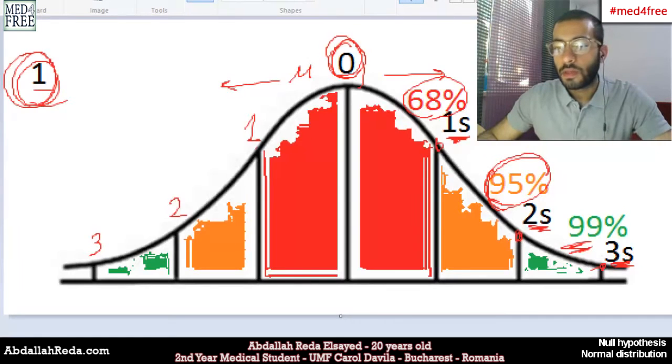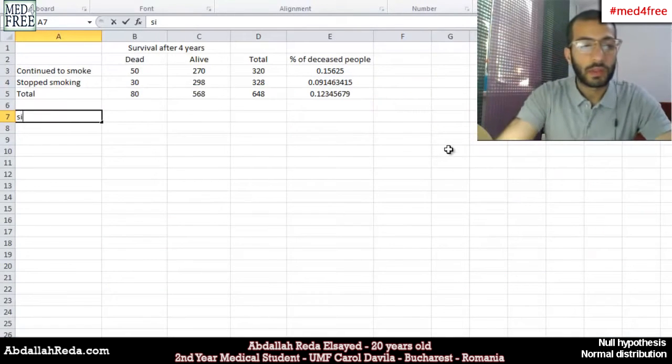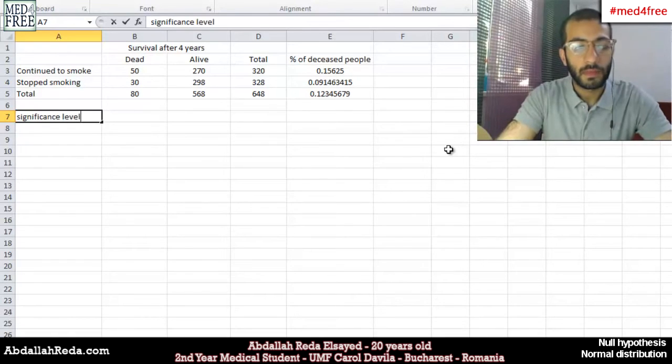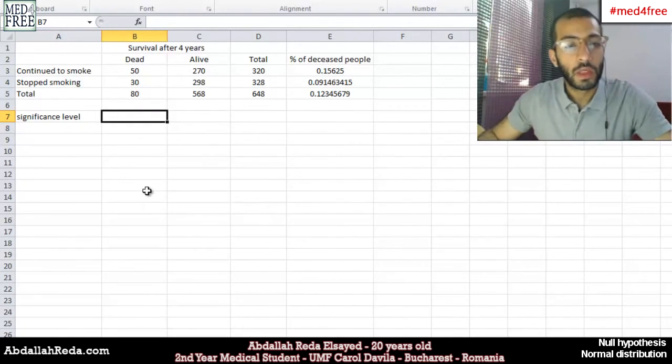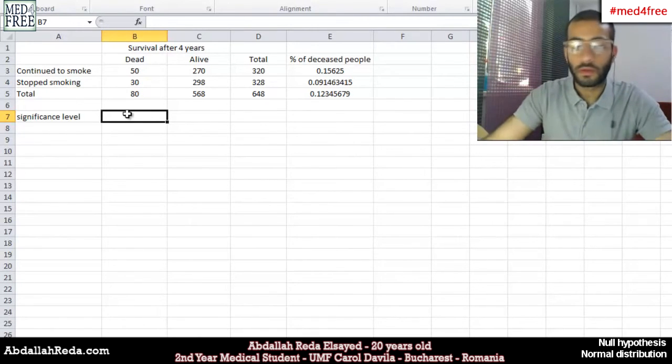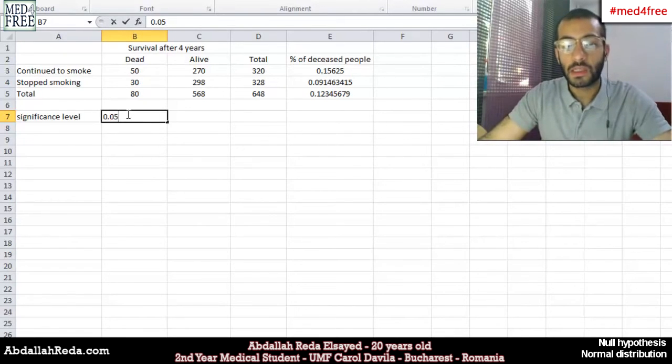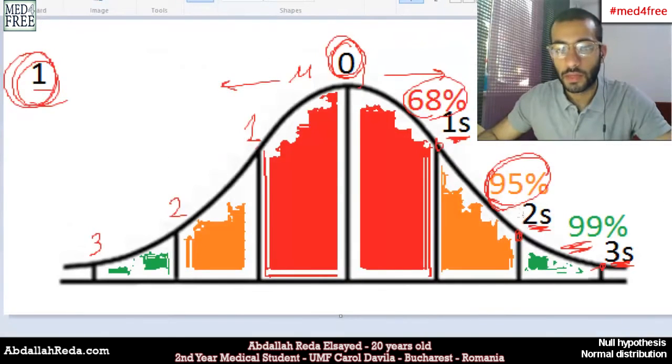We have something which is called the significance level. So the significance level would equal one minus the areas that we talked about. Most of the people use the significance level of 0.05, which means one minus 0.95. So two standard deviations.